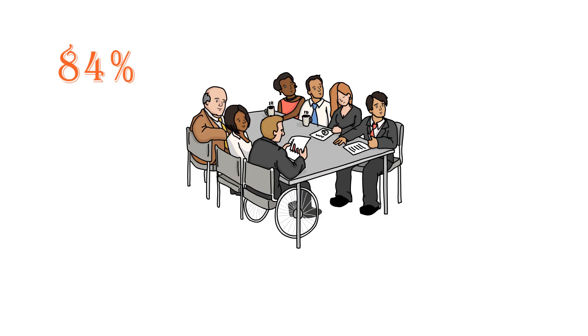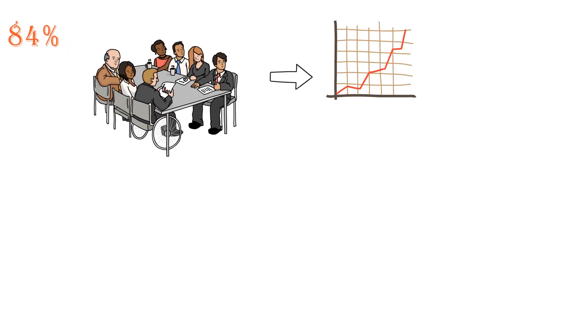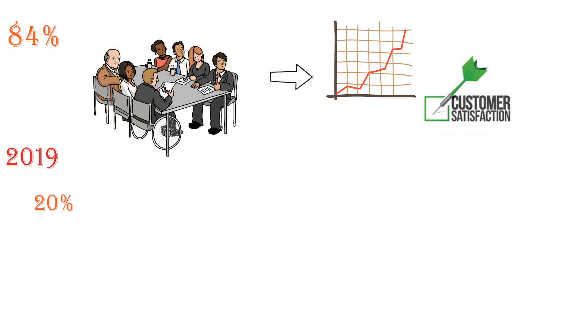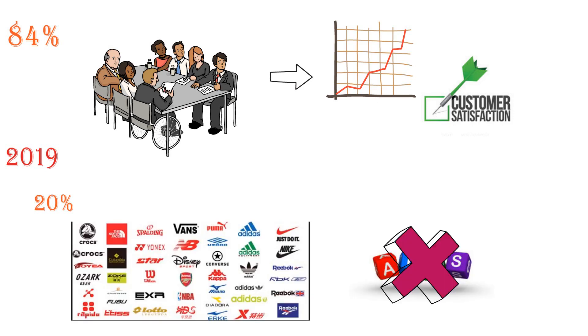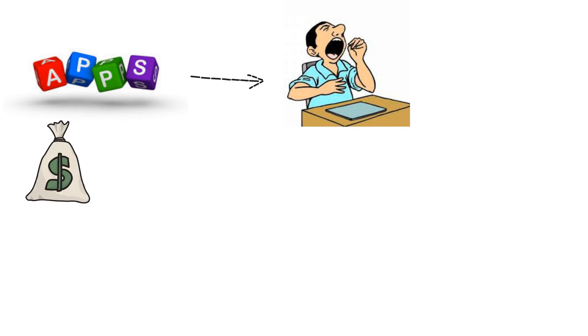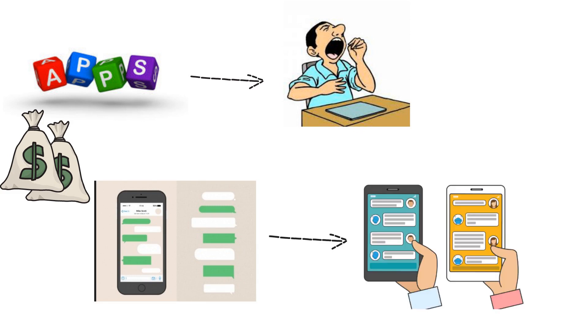A 2017 Gartner survey found that 84% of organizations expected to increase investments in customer experience, CX, technology in the year ahead. By 2019, 20% of brands will abandon their mobile apps, as many brands are finding that mobile apps are not delivering the level of adoption and customer engagement they expected. Brands are now investing to build presence in consumer messaging apps to reach customers where they spend a high percentage of their time.